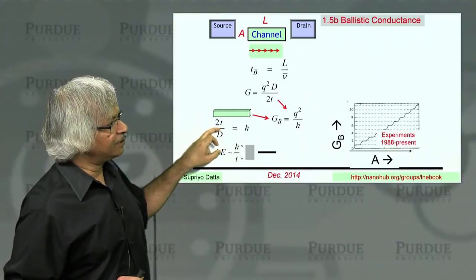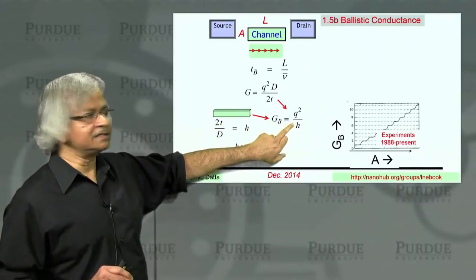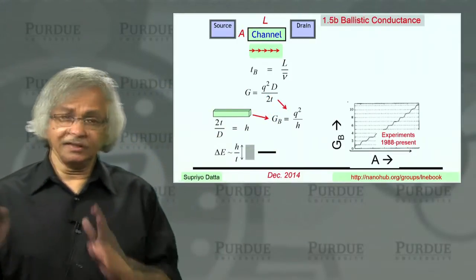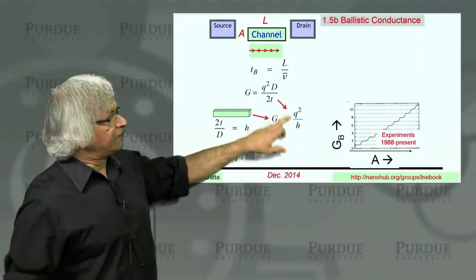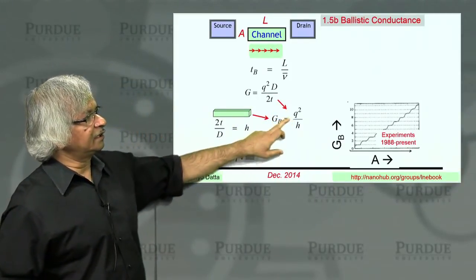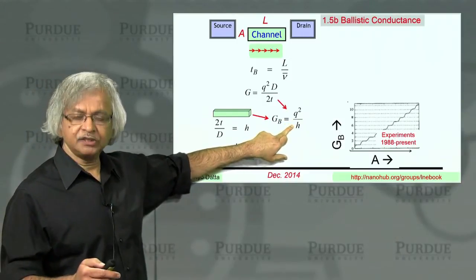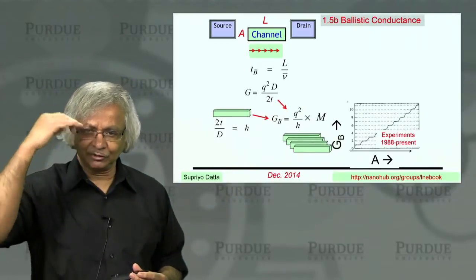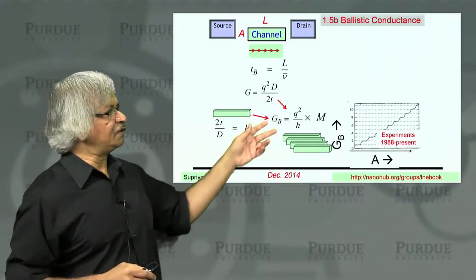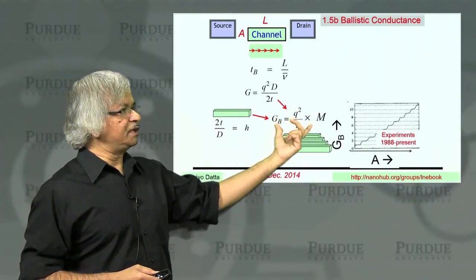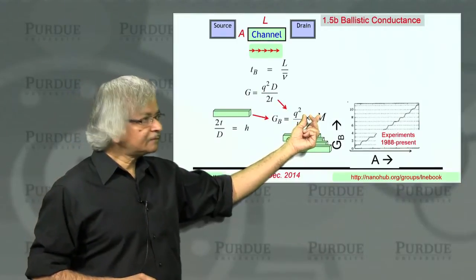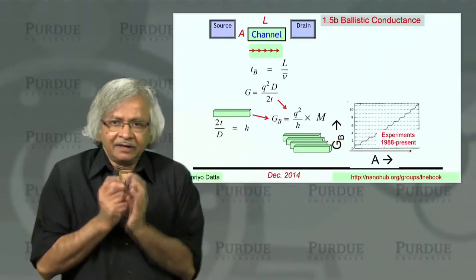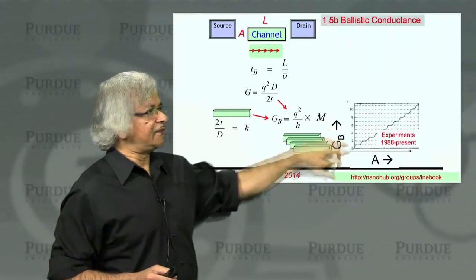And with this, you can then rationalize this ballistic conductance as being q squared over h. And this is something we'll go into in more detail actually in the second unit, where we'll do it properly. But from this point of view, one-dimensional conductor gives you a ballistic conductance of q squared over h. And the real conductor you could view as lots of 1-D conductors in parallel, which you could call the conducting channels. So if you have m of them, the conductance would be q squared over h times m. And that's exactly what this experiment shows.